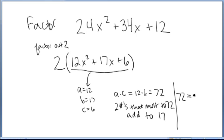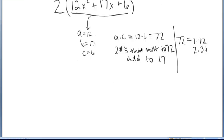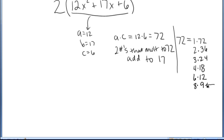I'll start with 1. 1 times 72 makes 72. 2 times 36 makes 72. 3 times 24. 4 times 18. 5 doesn't multiply into 72 evenly, but 6 times 12. 7 doesn't multiply into 72 evenly, but 8 times 9 does. If I continue this list, I would get 9 next, but then I would start repeating myself — 9 times 8, which is already on the list. So here are all the ways I can multiply to 72 using positive integers.